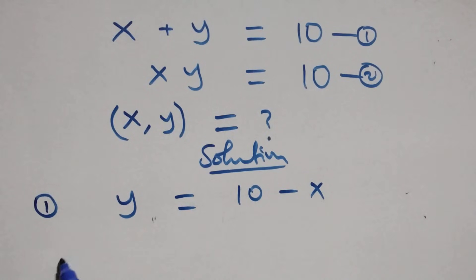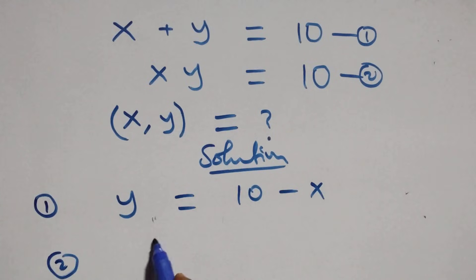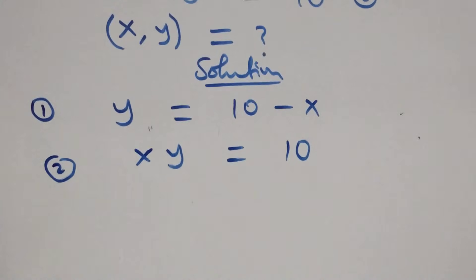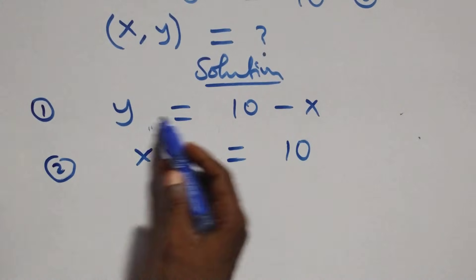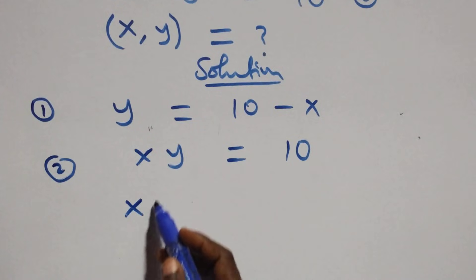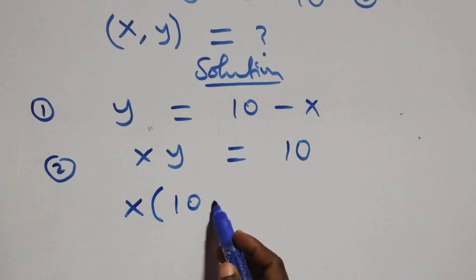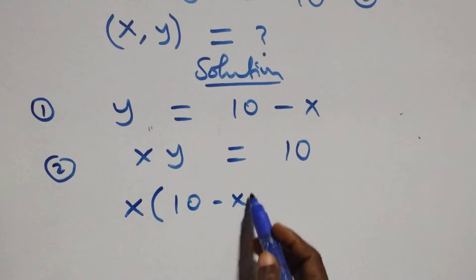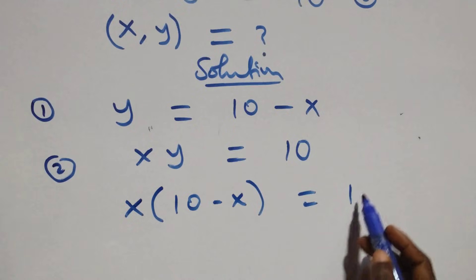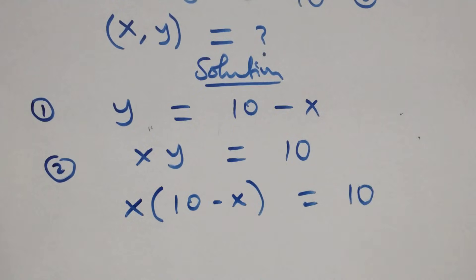Then also from equation 2, which is x times y equals to 10, we substitute the value of y here and this becomes x times (10 minus x) equals to 10.